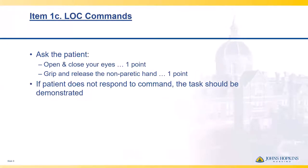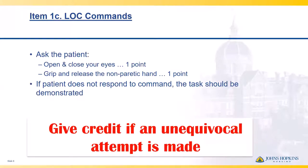The third part of level of consciousness is following commands. You're going to ask the patient to open and close their eyes, and then grip and release your hand, using the patient's non-paretic hand. You give them credit if there's an unequivocal attempt made — so if you can see they're actually trying to squeeze your hand but can't, you can give them credit. If the patient does not respond to a command, the test should be demonstrated — you can coach them by pointing to your eyes and showing them eyes opening and closing to have them mimic you.